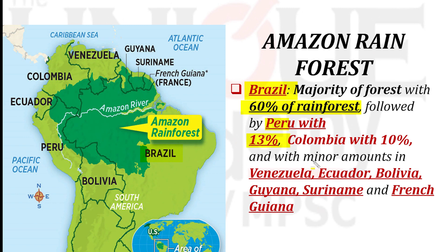Beyond Brazil, Peru, and Colombia, small portions of the Amazon rainforest are also found in other countries including Venezuela, Ecuador, Bolivia, Guyana, Suriname, and French Guiana.